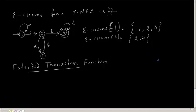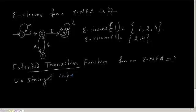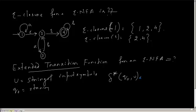So how will the extended transition function for an epsilon-NFA look like? Suppose I have a string U, which is a string of alphabets, and I have a starting state Q0. The extended transition function is represented as delta star. So delta star of Q0 with U — what will it look like?